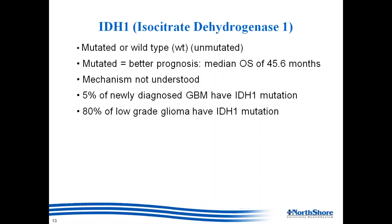The IDH1 mutation — isocitrate dehydrogenase — is uncommon in glioblastoma, seen in only about 5% of patients, but it leads to significantly better prognosis, with overall survival on the order of 45 months. In low-grade gliomas, a much higher percentage of patients carry the mutation, which partly explains their better survival.